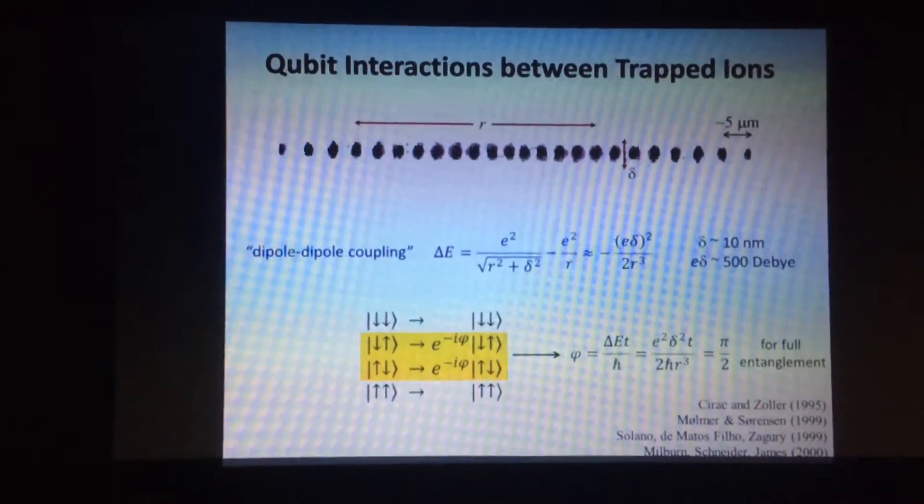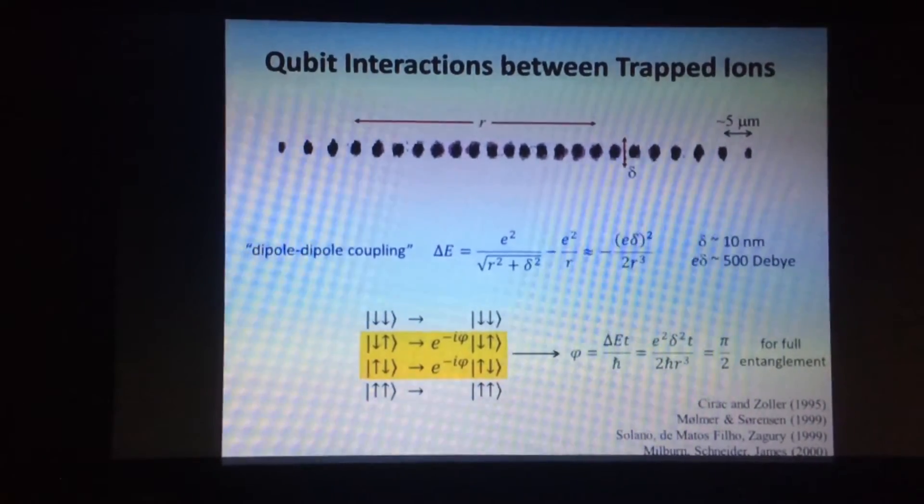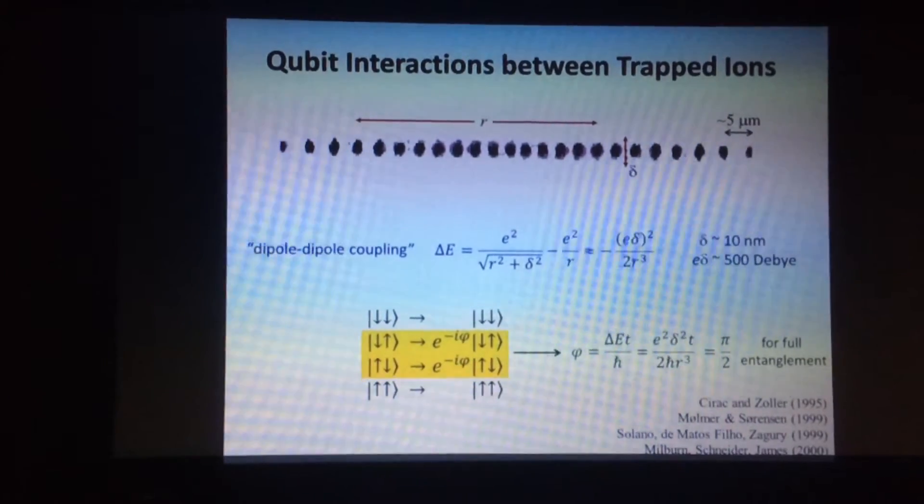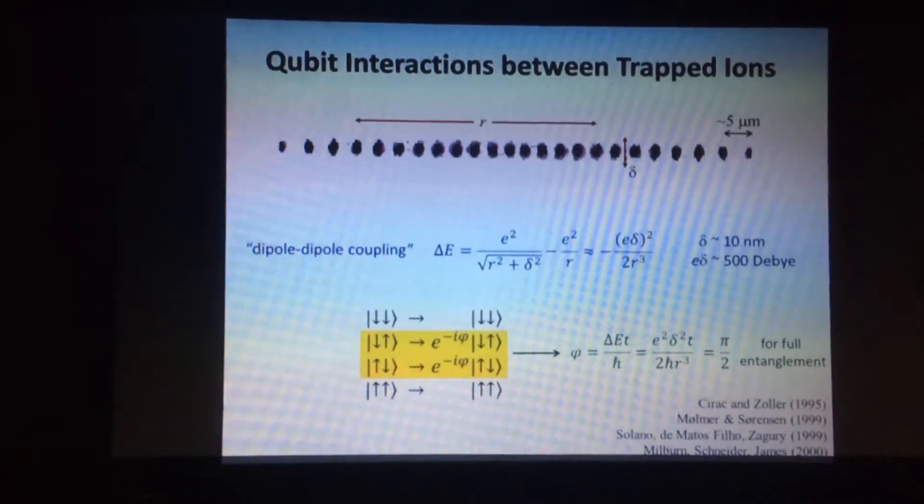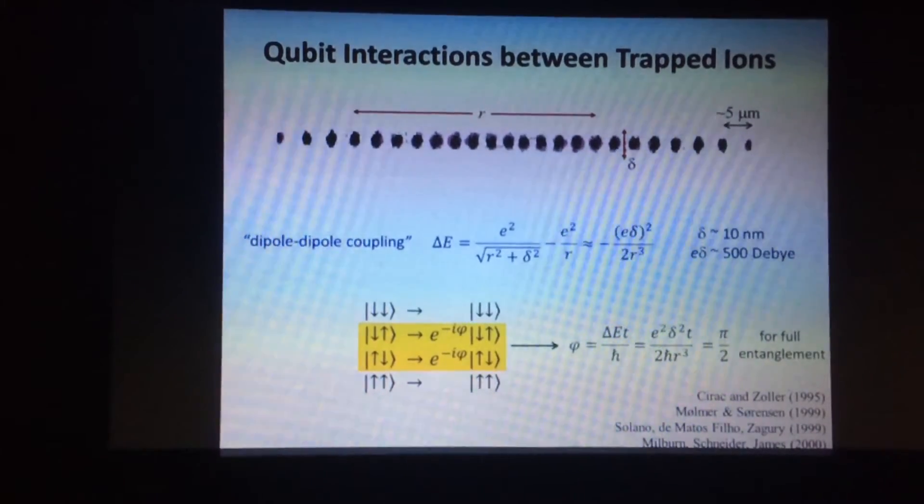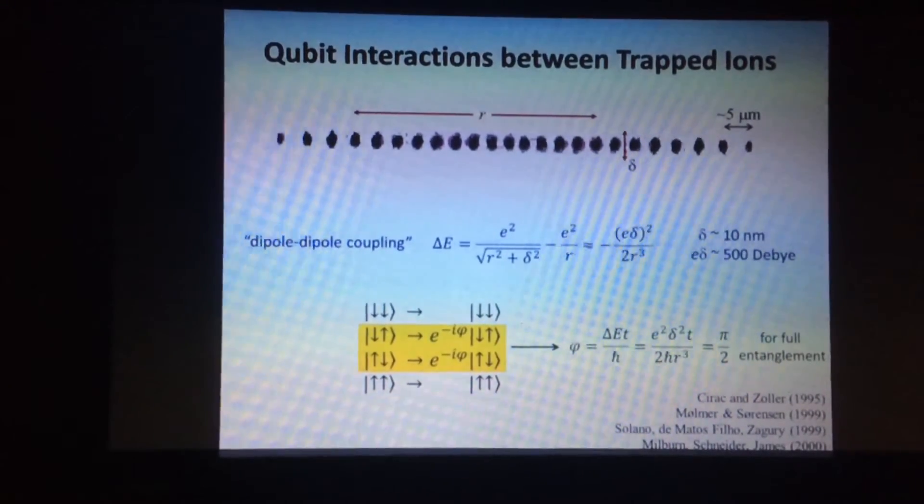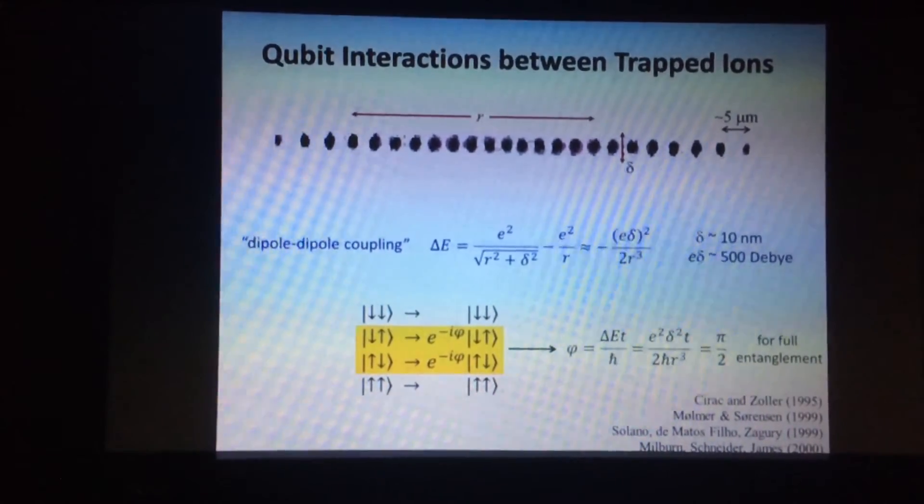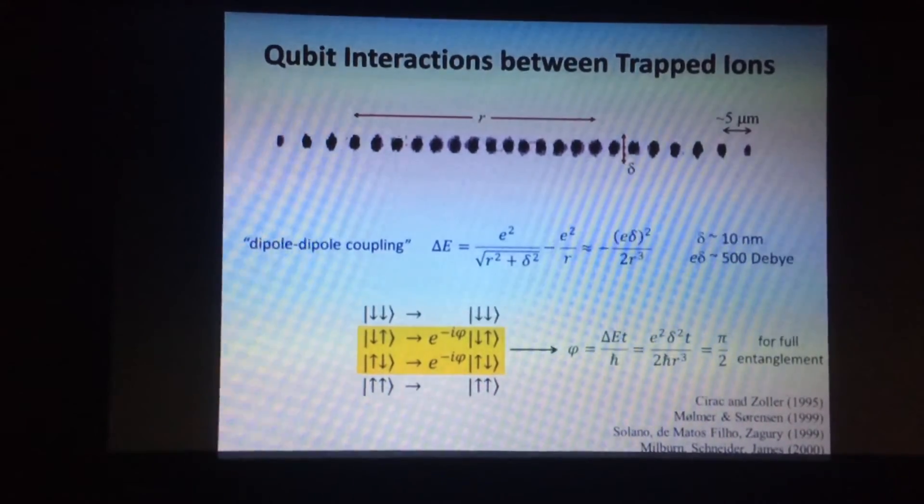And when that phase factor is pi over 2, these two numbers here in front are minus i. And it turns out that's equivalent to a controlled NOT gate or a NAND gate. It's the sort of bread and butter of the gate model of quantum computing. It's a universal gate when taken along with other more trivial gates.